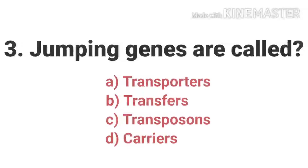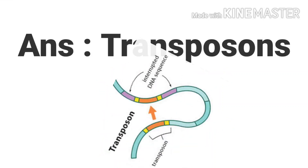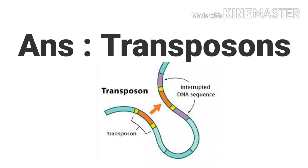The third question is: jumping genes are called? Options are Transporters, Transposons, Transposants, and Carriers. Transposons are a DNA sequence that can change its position within a genome, sometimes creating or reversing mutations and altering the cell's genetic identity and genome size. The answer is Transposons. Jumping genes means Transposons.